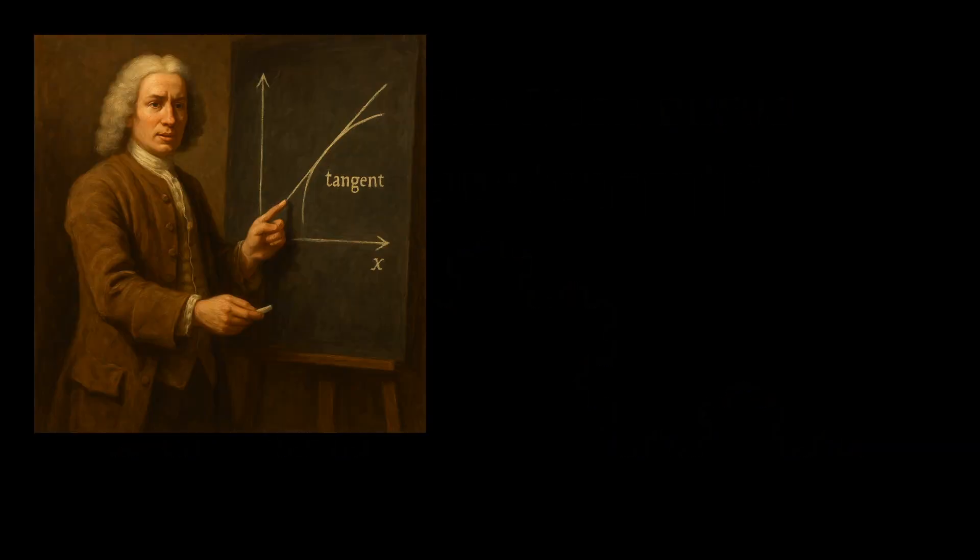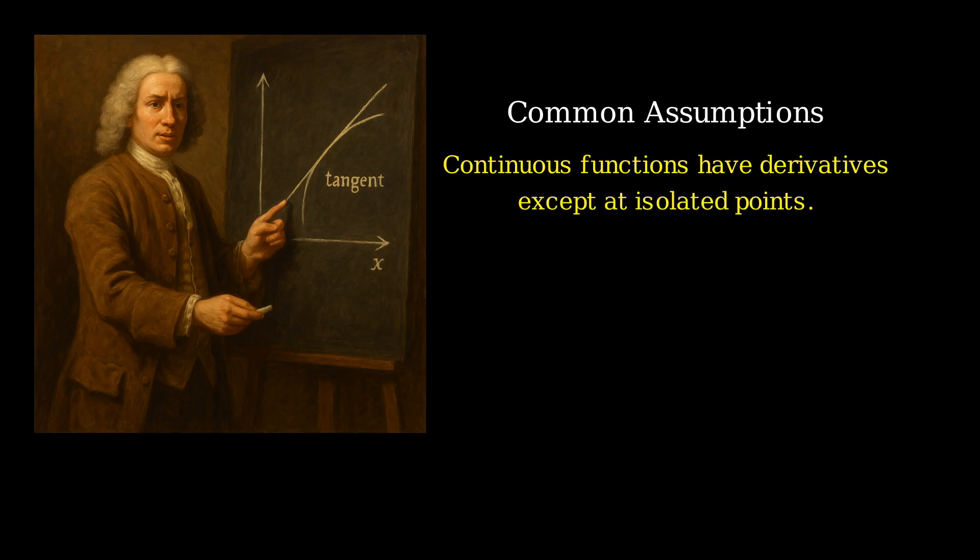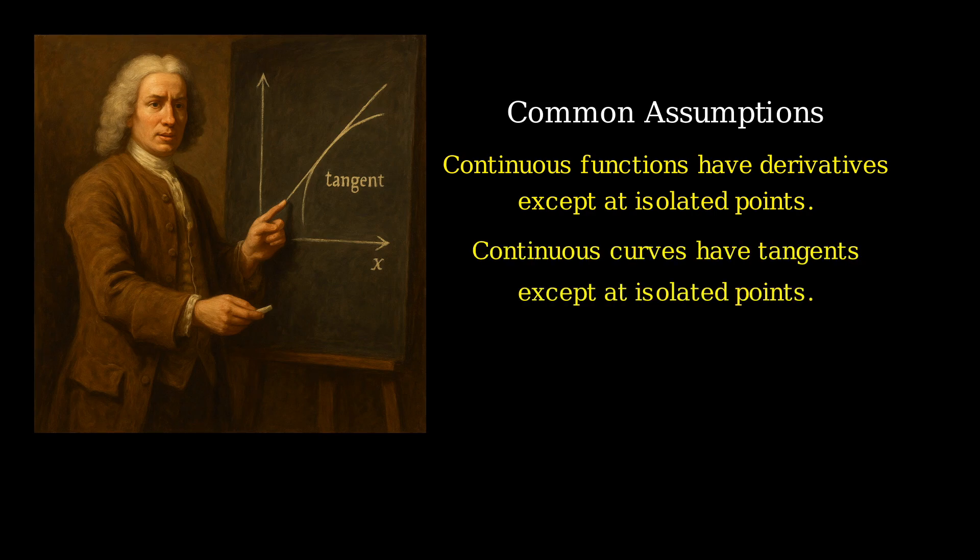Well into the 19th century, mathematicians assumed that a continuous function always had a first derivative which could become undefined or infinitely large only at isolated points, and thus that a continuous curve always had tangents except at these isolated points.